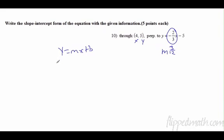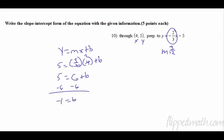So my y was 5, my m was three-halves, my x was 4, plus b. Two goes into four twice, three times two is six. So 5 equals 6 plus b. Subtract 6. Negative 1 equals b. And here we go: y equals three-halves x minus one.